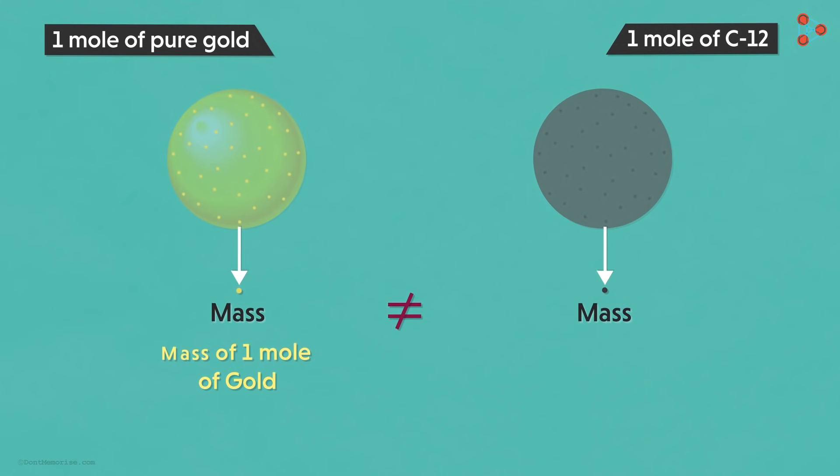Hence, the mass of 1 mole of gold will definitely be different from the mass of 1 mole of carbon-12. So 1 mole of gold weighs around 196.97 grams. That is because mass of gold atom is different from the mass of carbon-12 atoms.